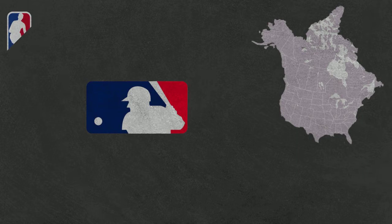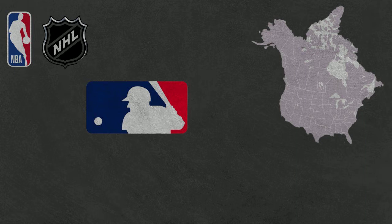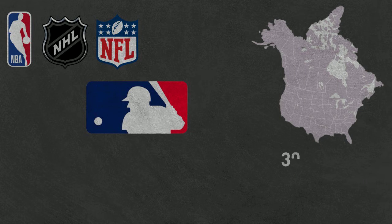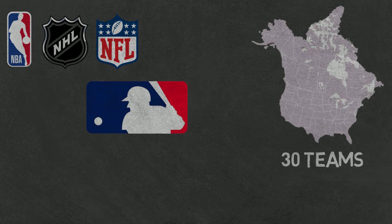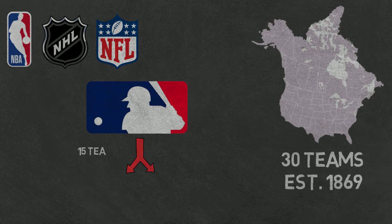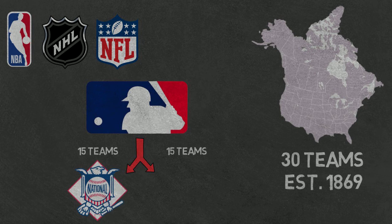If you're at all familiar with how other North American sports leagues are organized, then the MLB will seem no different. Major League Baseball consists of 30 teams spread across the United States and Canada, and has been around in some form since the 1860s. MLB consists of two smaller leagues of 15 teams each, known as the National League and American League.